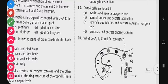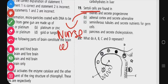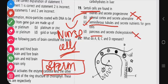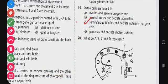Question 19 involves Sertoli cells. Ovaries, adrenal cortex, seminiferous tubules - Sertoli cells are located in seminiferous tubules and secrete nutrients to germ cells. Since seminiferous tubules are related to sperm, option C is the correct answer. Pancreas secreting cholecystokinin is wrong. For question 19, the correct answer is option C - seminiferous tubules secrete nutrients to maintain sperm nutrition.